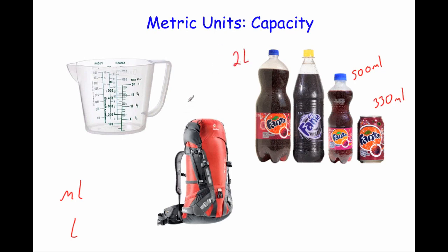But metric units for capacity are also used quite often to show how much a container might hold. So a rucksack might hold 50 litres or 60 litres and it just gives an indication of how big the rucksack is, like how much stuff can be held within it.